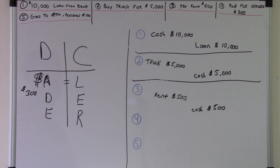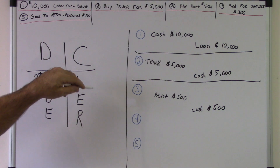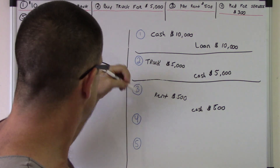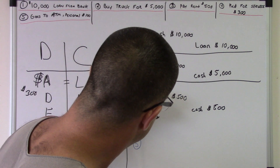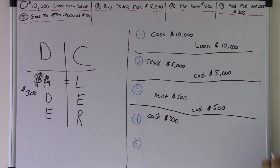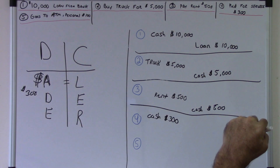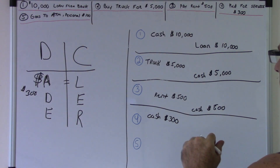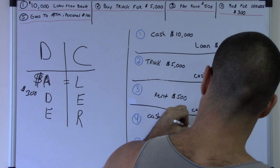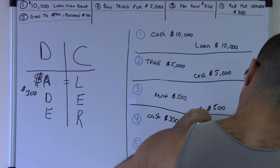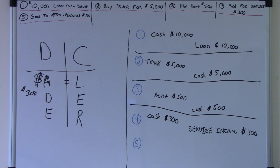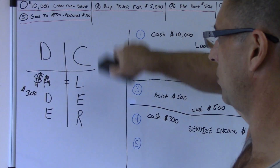How did you make it? Is it a liability — do you owe somebody? No. Is it retained earnings or equity? No. It's revenue — you worked for it. Service income. So we're going to put service income as the credit, three hundred dollars. These all match up. Debits equal credits, debits equal credits. DC AID LUR.